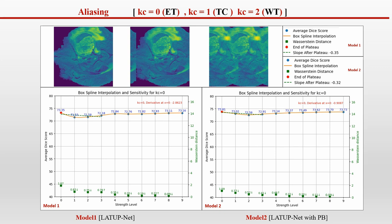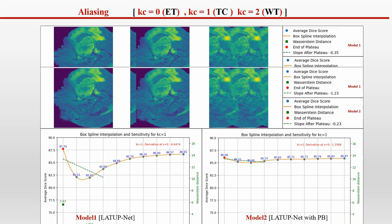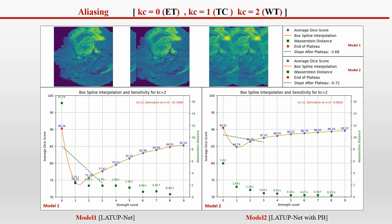With aliasing, we notice an unusual behavior where both models' performance immediately drops at the lowest level of noise and then increases again, consistent across all tumor regions. This is because at a lower level of noise, a single alias adds too many new features to the image compared to when those features are blurred out due to multiple aliases. Notably, model 2 is more robust against this perturbation compared to model 1.